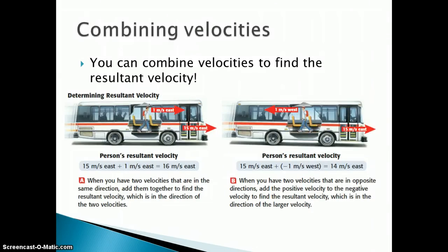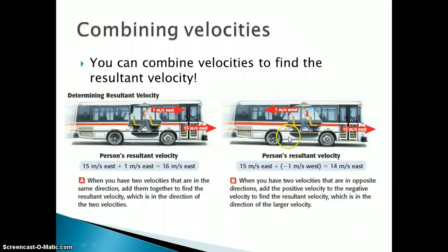We can also combine velocities to figure out the overall or resultant velocity. In this picture, you have a guy walking on a bus toward the driver, walking in the same direction as the bus is moving. He's moving about 1 meter per second east, and the bus is traveling at about 15 meters per second east. We can add these two together — 15 plus 1 meters per second east equals 16 meters per second east — giving us the resultant velocity. If on the other hand he's walking in the opposite direction, we use 15 meters per second east plus negative 1 meter per second west. He's traveling in the opposite direction, so we use a negative number, meaning he's actually traveling slower than the bus.